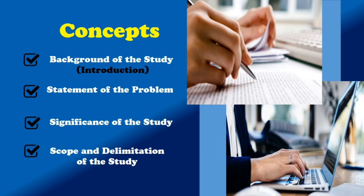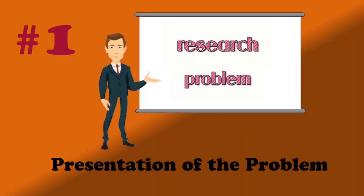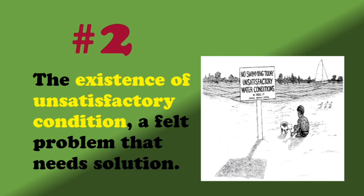In writing these parts of the first chapter, there are guidelines for you to follow. In writing the background of the study or the introduction part, first, you have to present your problem — what you are going to study in this particular research. Second, is there an unsatisfactory condition regarding that particular topic, or is there a field problem that needs to be solved so that you have to undertake such an investigation?